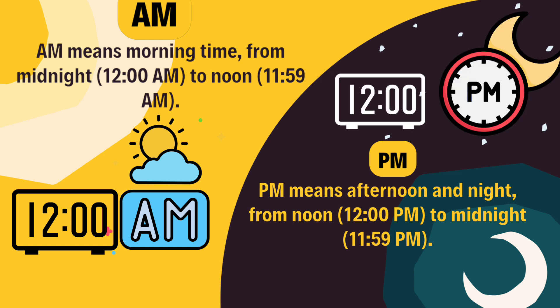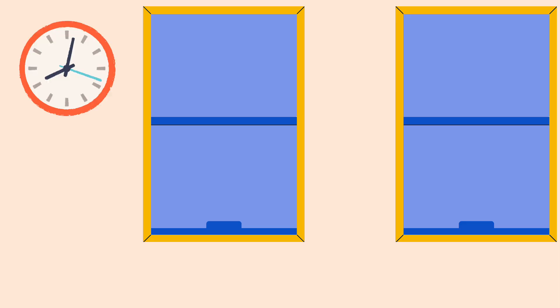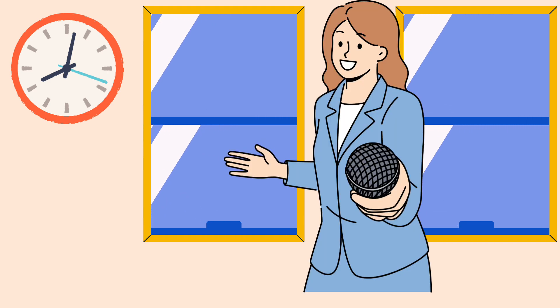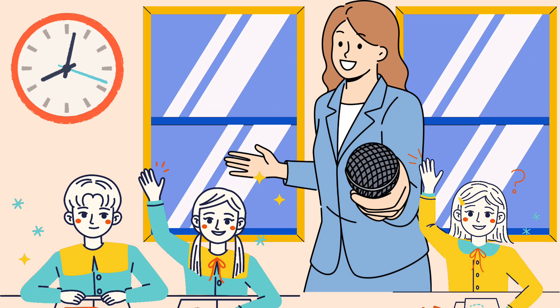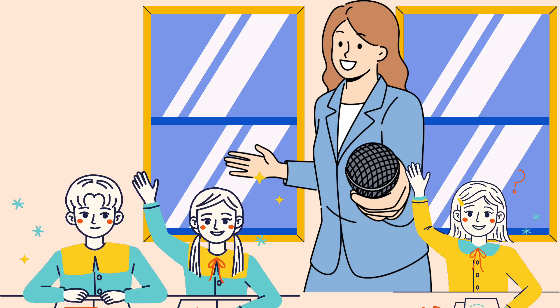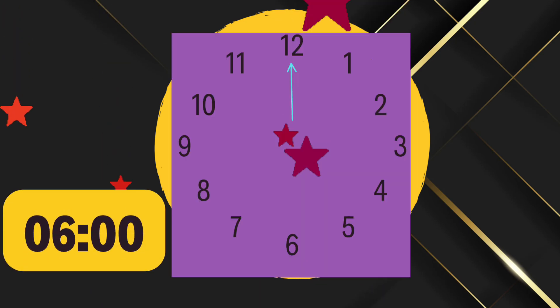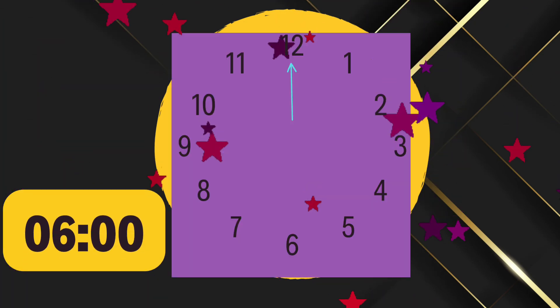For example, 8 AM is in the morning and 8 PM is in the evening. Now let's do some practice! Question one: if the hour hand is on six and the minute hand is on twelve, what's the time? It's six o'clock. Great work!